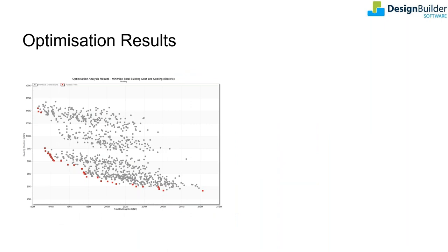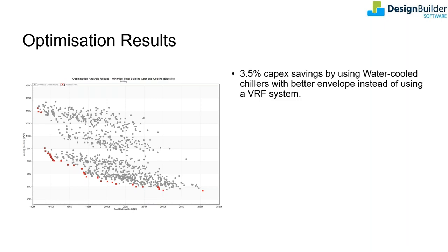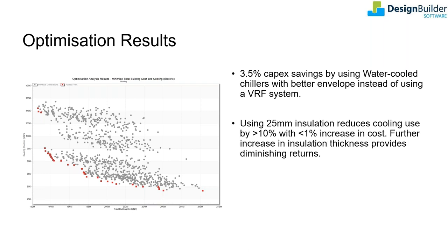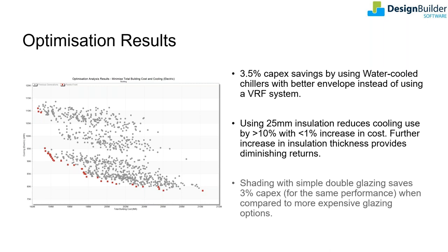Similar clusters and sub-clusters were analyzed and answers to the design questions were sought. Water-cooled chillers were found to be better — with a better envelope, similar performance to VRFs can be achieved with 3.5% capital cost savings. The effect of adding insulation and thermal mass is also seen, however adding insulation beyond optimal levels provides diminishing returns. Also, shading with simple double glazing saves 3% capital cost for the same performance when compared to more expensive glazing solutions. There are obviously more inferences that can be drawn, but the intent here is to show you the process.